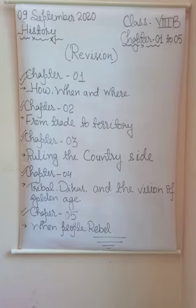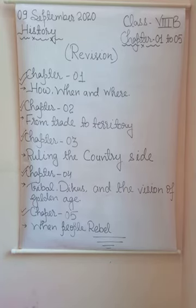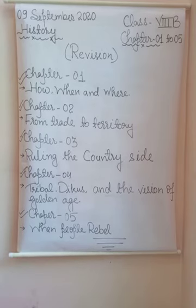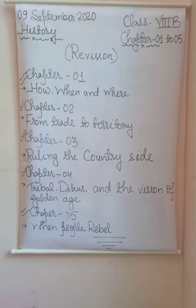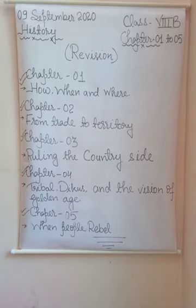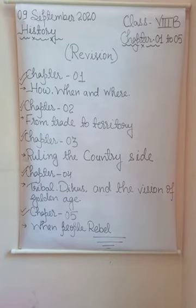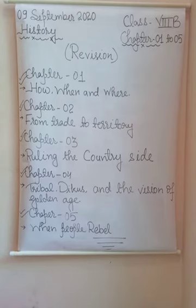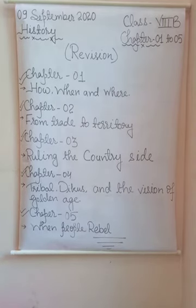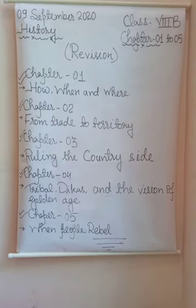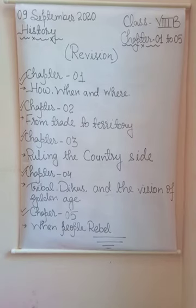The next point is: crops for Europe. The British started to force cultivators in various parts of India to produce commercial crops like jute in Bengal, tea in Assam, sugarcane in the United Provinces (now Uttar Pradesh), wheat in Punjab, cotton in Maharashtra and Punjab, and rice in Madras. The British used a variety of methods for increasing cultivation of the crops they needed. One important crop was indigo, which had great demand worldwide.